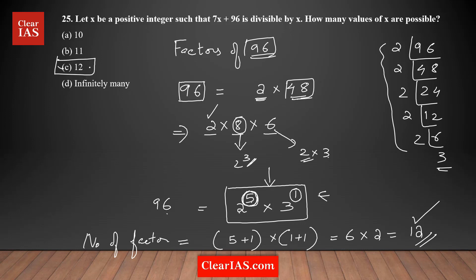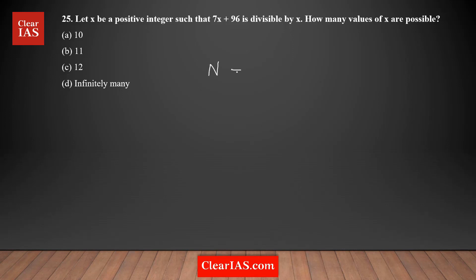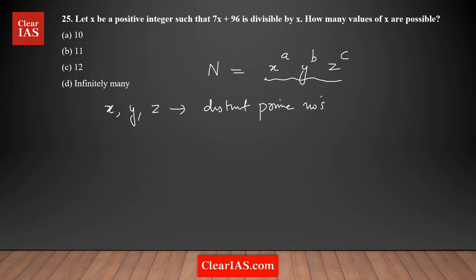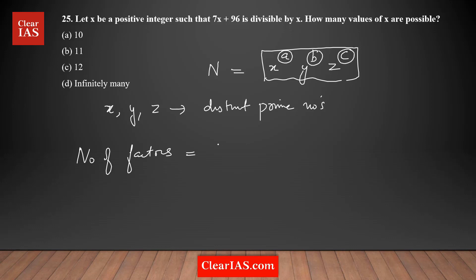To generalize: if a number N = x^a × y^b × z^c, where x, y, z are distinct prime numbers, then the number of factors equals (a + 1)(b + 1)(c + 1). You take each exponent, add 1, and multiply them all together. Use this formula whenever you need to find the number of factors of any number.